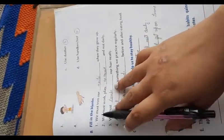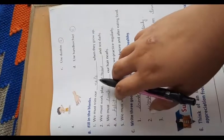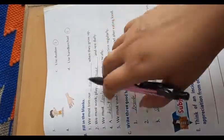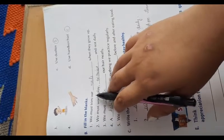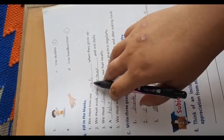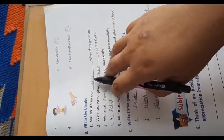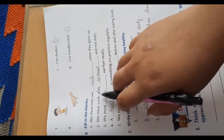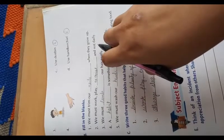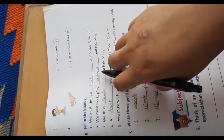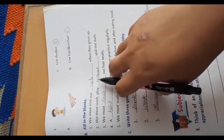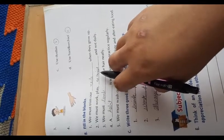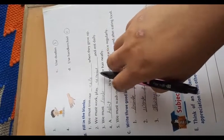Now fill in the blanks. We must trim our dash when they grow up. We must trim our nails, the spelling is N-A-I-L-S. Second, we must work, play, dash, and rest daily. Exercise, the spelling is E-X-E-R-C-I-S-E.